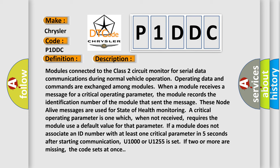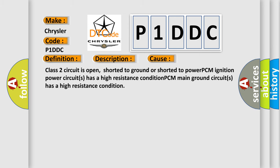This diagnostic error occurs most often in these cases: Class 2 circuit is open, shorted to ground or shorted to power. PCM ignition power circuits has a high resistance condition. PCM main ground circuits has a high resistance condition.